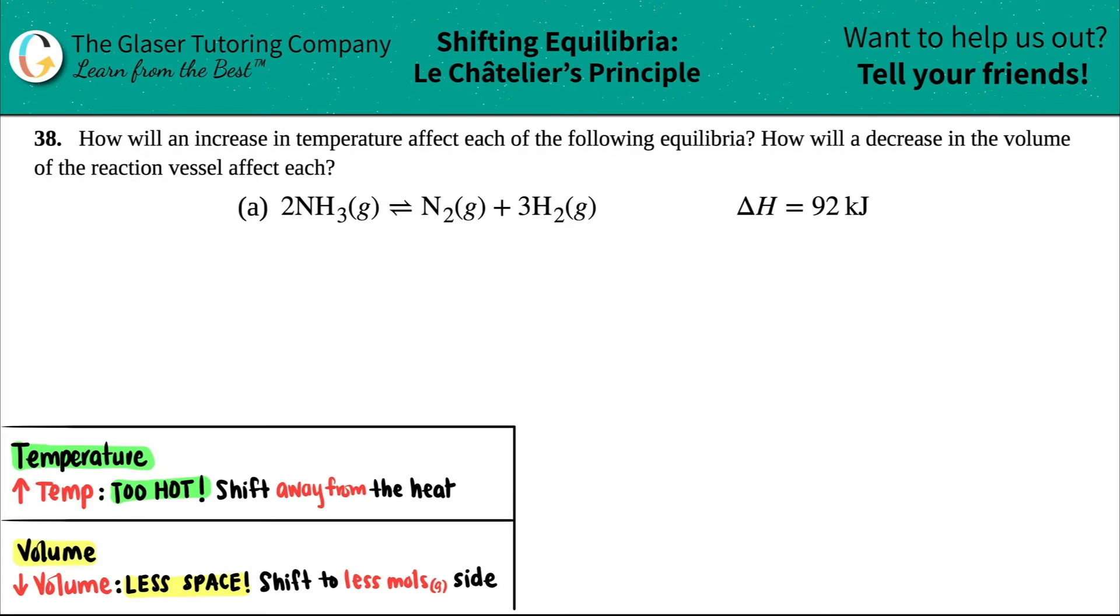Number 38: How will an increase in temperature affect each of the following equilibria, and how will a decrease in the volume of the reaction vessel affect each? We have letter A out of this bunch.